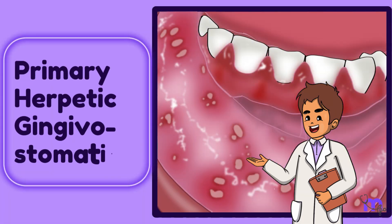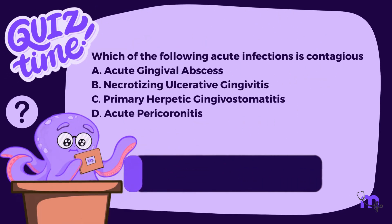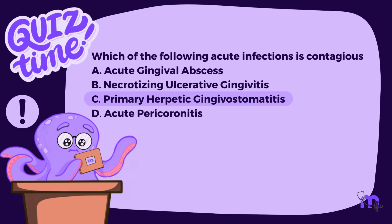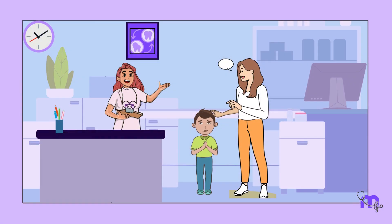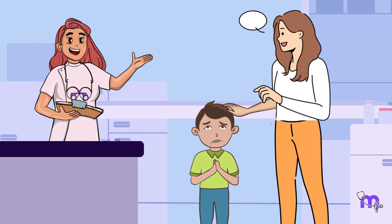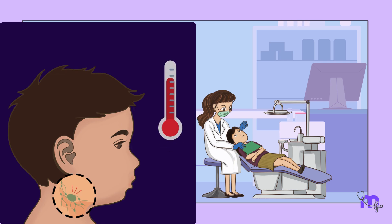Primary Herpetic Gingivostomatitis Pop Quiz. A 10-year-old male child named Ajo was brought to my OPD by his parents, complaining that he had not been eating and drinking properly for two days. The child was irritable and uncomfortable. On extraoral examination, his cervical lymph nodes were palpable and he had a slight elevation in body temperature.